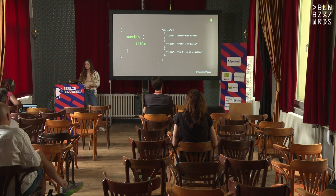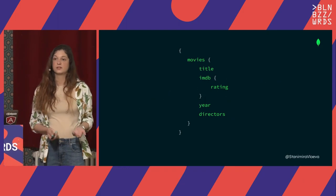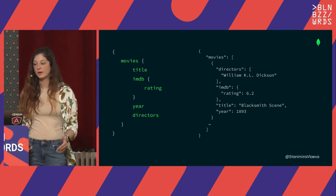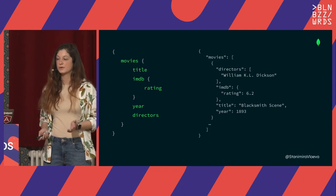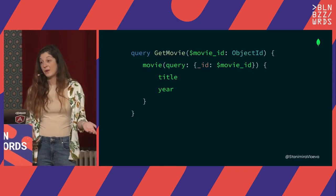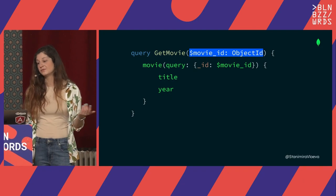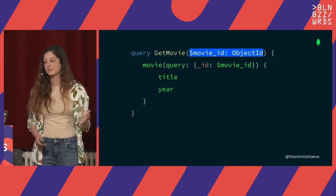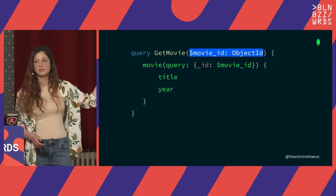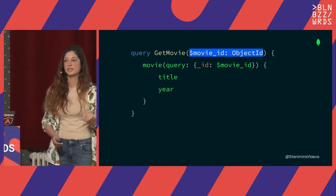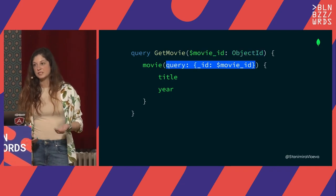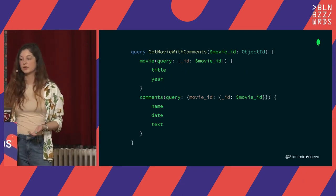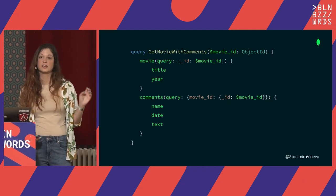You can also have nested objects. If you request the title, the IMDB object — specifically the rating, the year, and the directors — this is what you get back. You can have parameters and filter by movie ID. You can see that we have a type here — something we don't necessarily have with REST. We can actually query multiple entities. The powerful thing is that we can get the movie together with its comments with just a single request.